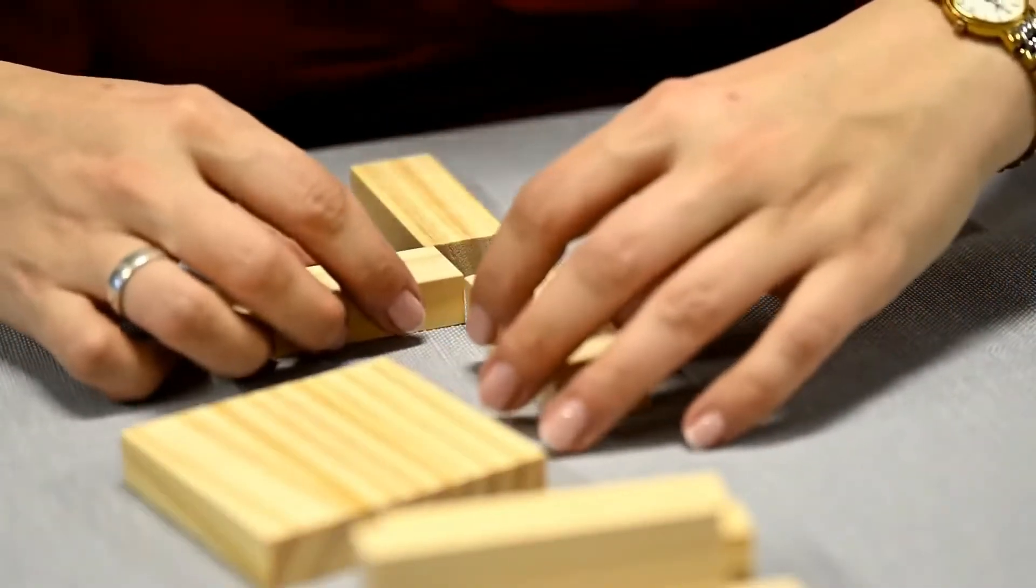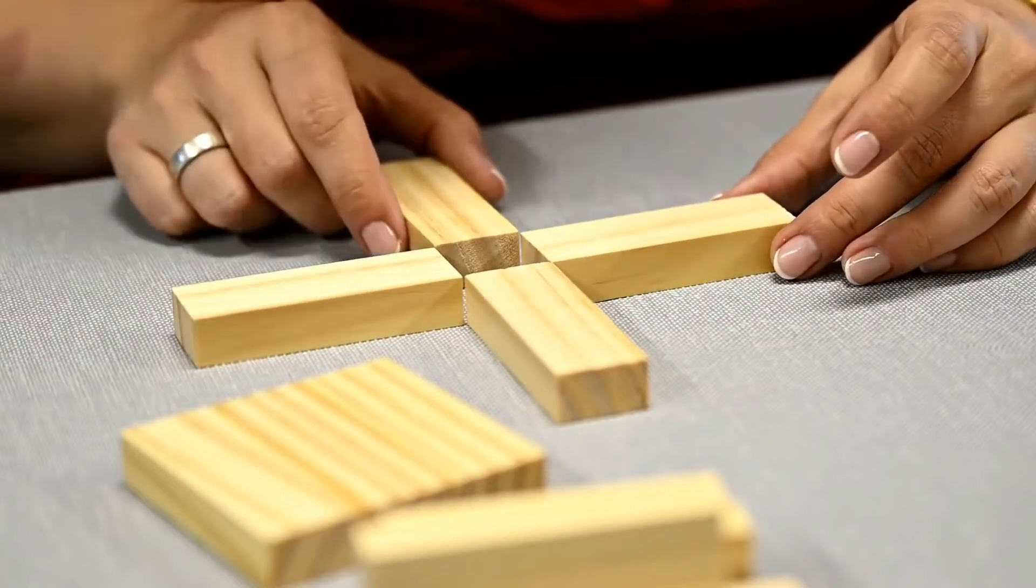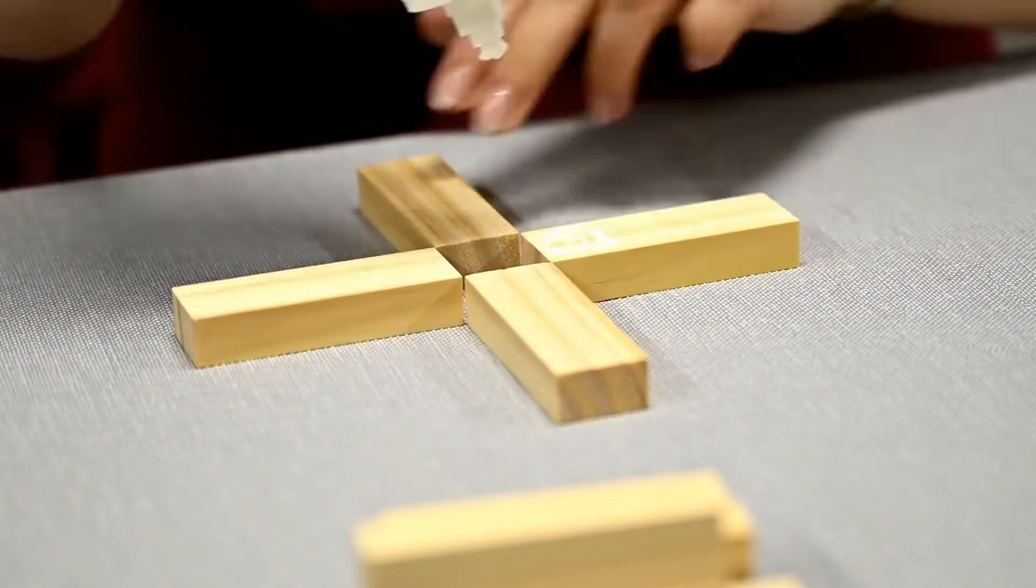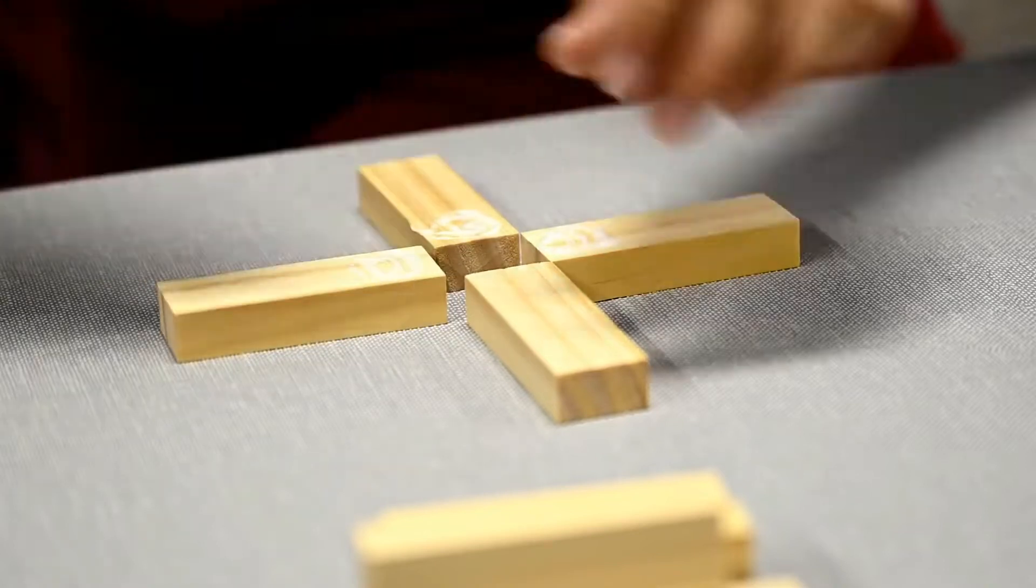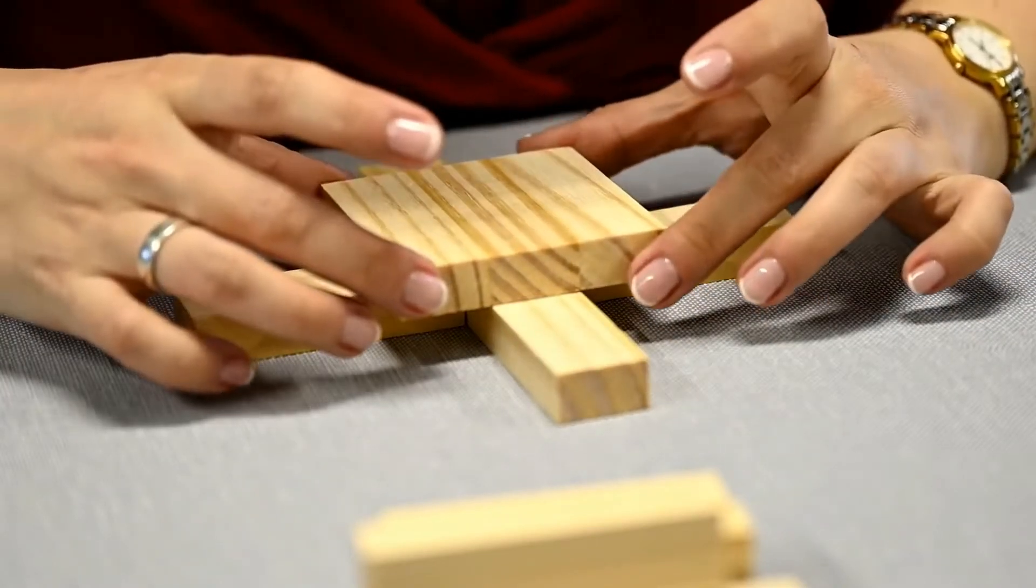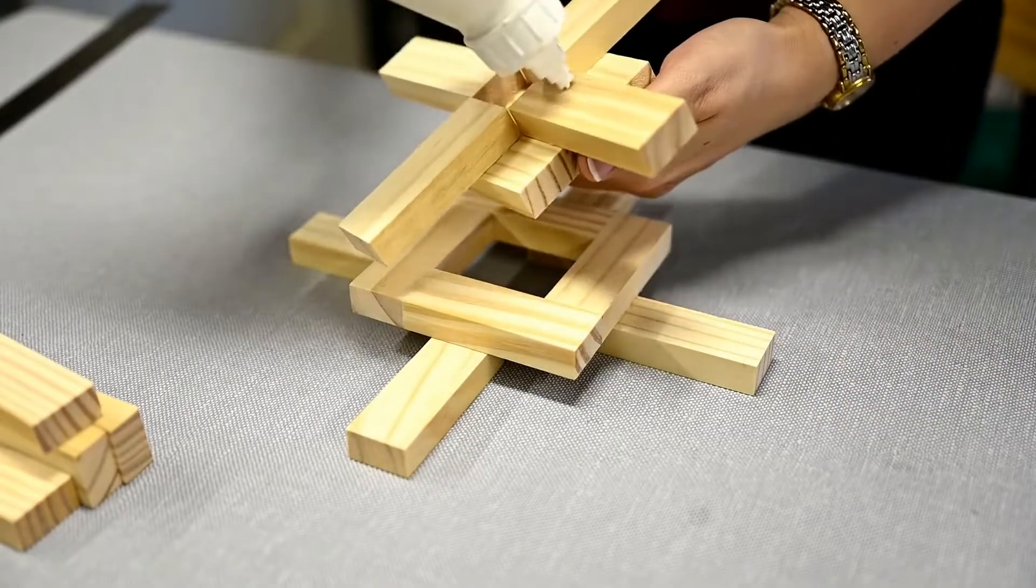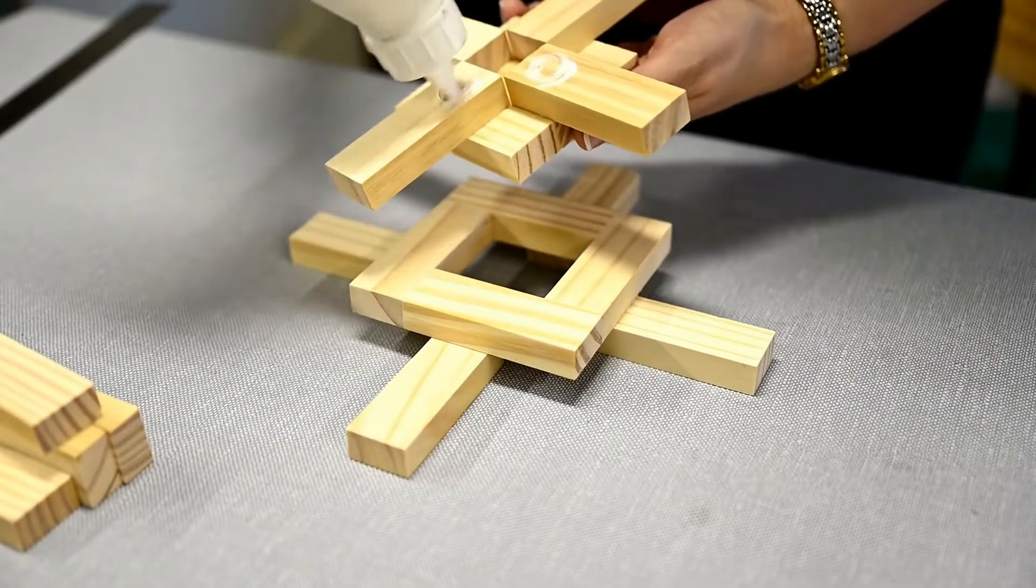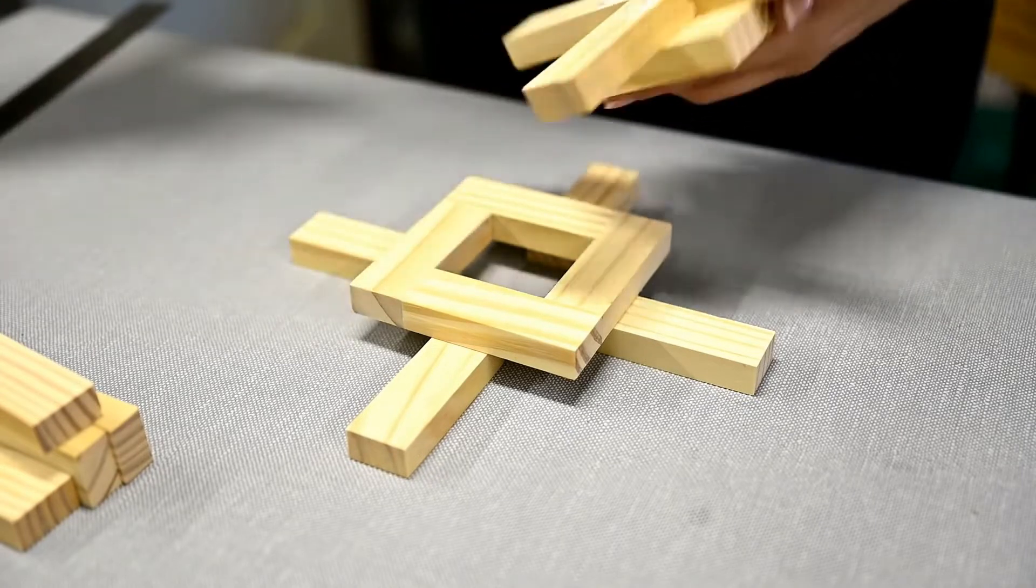Then I'm making another cross out of four blocks with a small square in the center and attaching the small square part over them. And after both top parts are dry I'm attaching the smaller part over the top of the larger one.